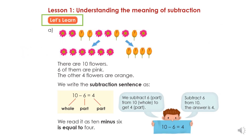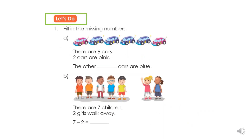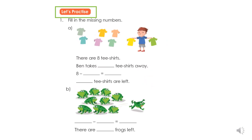The modelling takes place in Let's Learn, which is the explicit 'I Do' part of the lesson. The next part of the lesson is Let's Do, where students are provided with 'We Do' activities and teachers have the opportunity to guide their learning. Then finally, there are Let's Practice activities as independent 'You Do' student questions.